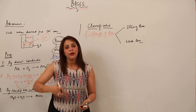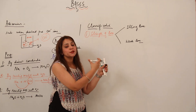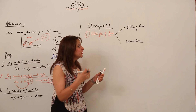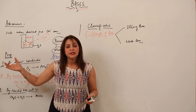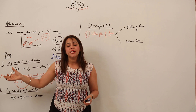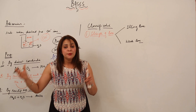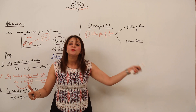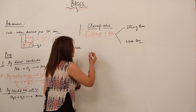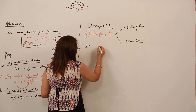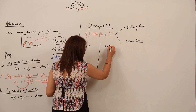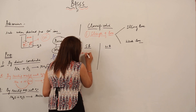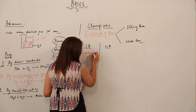Just as strong acids completely dissociate to produce hydronium ions, and weak acids partially dissociate, the same applies to bases but with hydroxide ions instead. A strong base is one which completely dissociates or ionizes to give all its hydroxide ions.